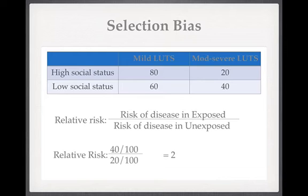A relative risk of 2 means the disease is twice as common, or the risk is twice as great, in the exposed group — the lower social status group. So, fantastic, we've proven an association and can go on to publish and head forward to academic fame.